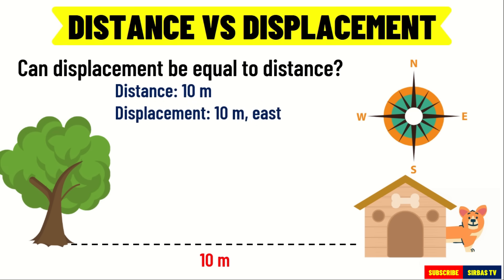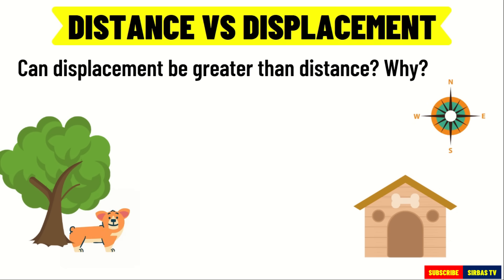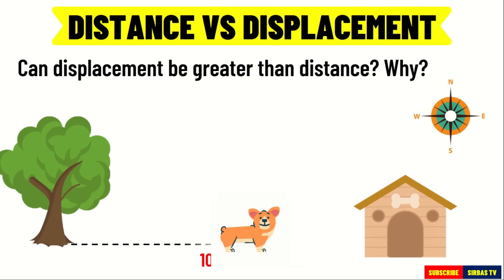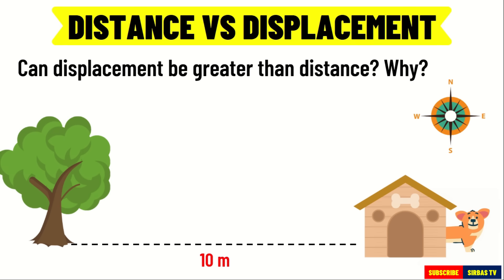In this example, the distance traveled by the dog from tree to the house is 10 meters, and the displacement is 10 meters east. Another question: can displacement be greater than the distance? The answer is no. It can be shorter but it cannot be greater than the distance. Remember, displacement is the shortest length between the object's point of origin and its point of destination.